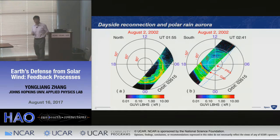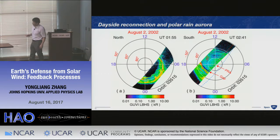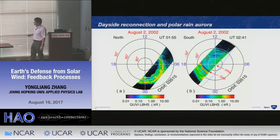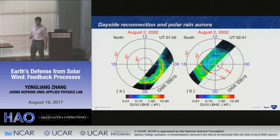We earlier discussed polar rain from whistler wave observations. Here is an example of polar rain aurora from GROOVY. This shows the northern hemisphere aurora oval with nothing visible in the polar cap, but in the southern hemisphere on the same orbit, the aurora fills the polar cap more or less uniformly, with a gap between this diffuse aurora and the poleward edge of the aurora oval. This relates to anti-parallel reconnection bringing polar rain electrons into the polar cap.